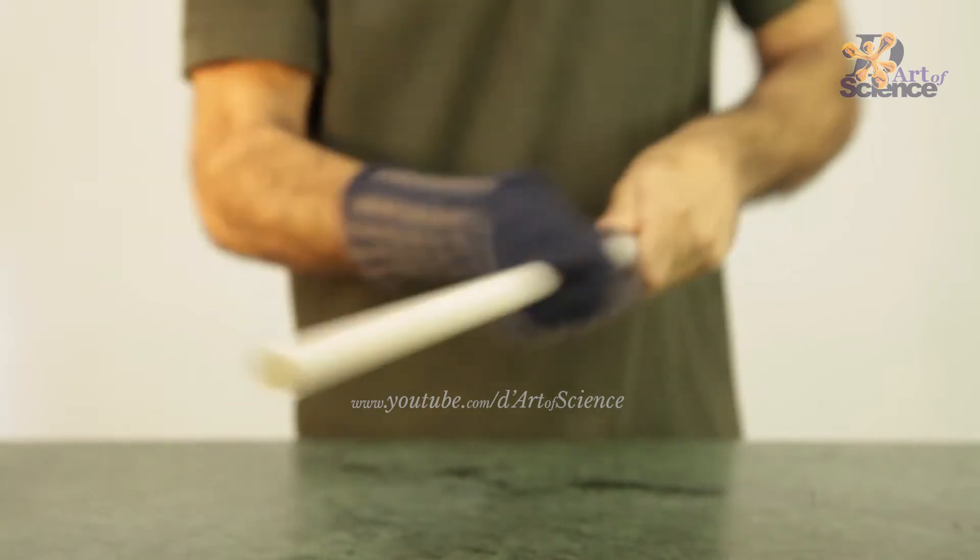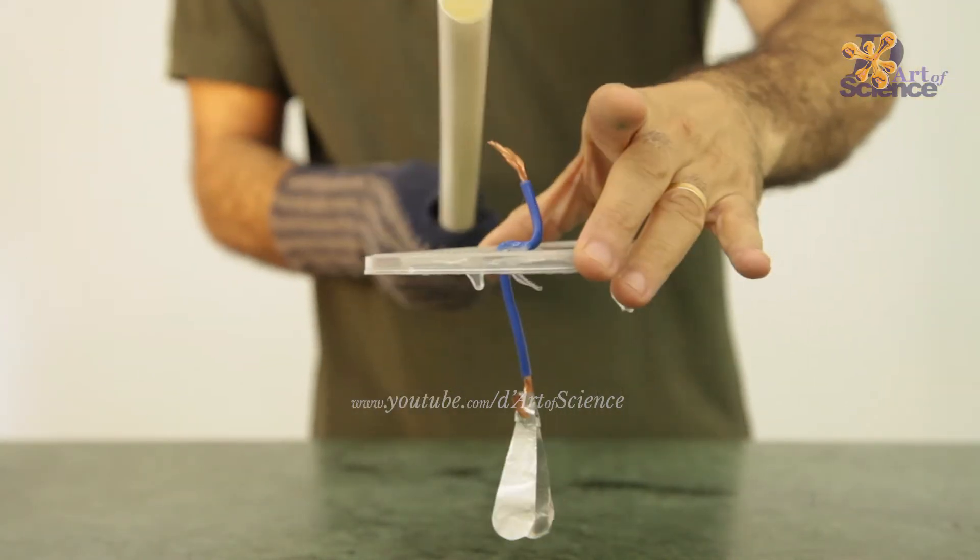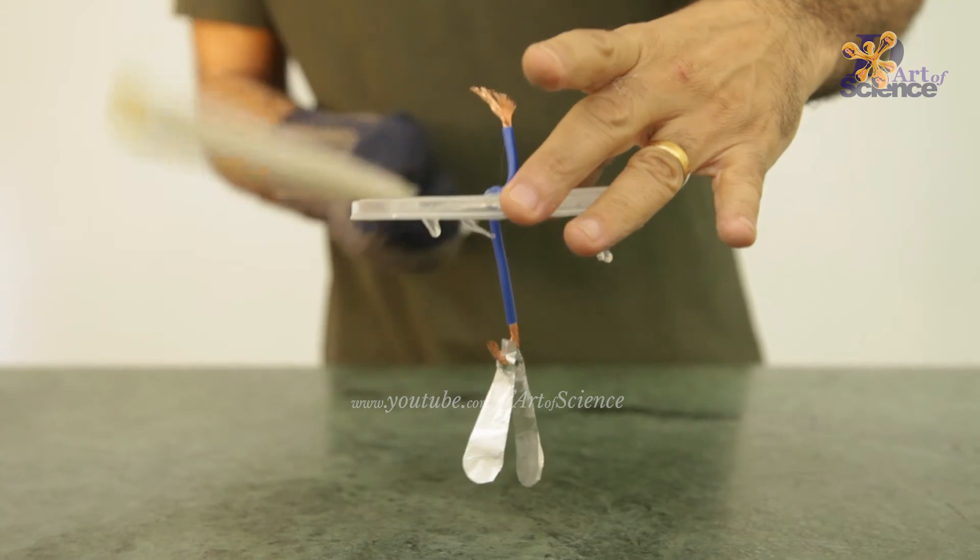If you remove the jar in this setup then the experiment doesn't work even though the foil shows some attraction to the charged PVC pipe.